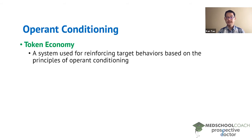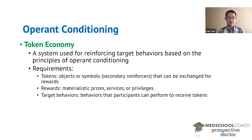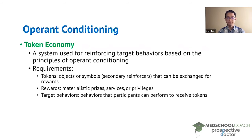The token economy has three requirements. First, we have tokens. These are objects or symbols that can be exchanged for rewards. Tokens are an example of a secondary reinforcer because they are not intrinsically rewarding, but they can be exchanged for rewards that can be primary reinforcers.